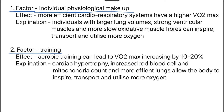The first factor is your individual physiological makeup. Individual to individual varies massively. Some people have more efficient cardiorespiratory systems, so they have a higher VO2 max. The reason for this is some individuals have larger lung volumes, stronger ventricular muscles, and more slow oxidative muscle fibres, which means they can inspire, transport and utilise more oxygen.